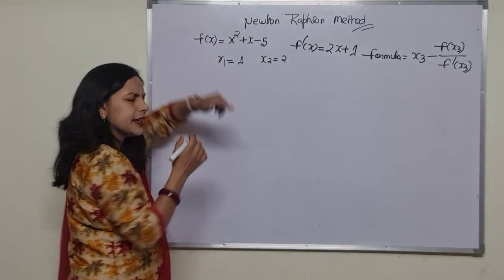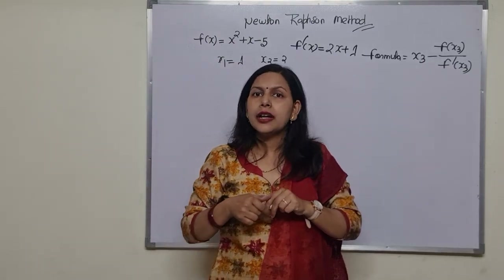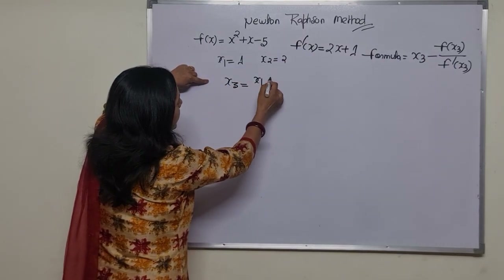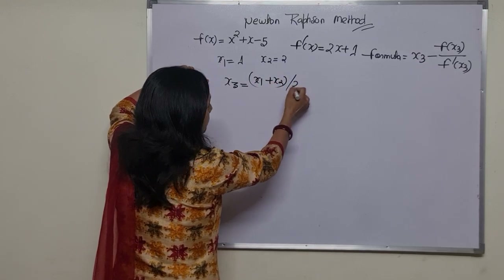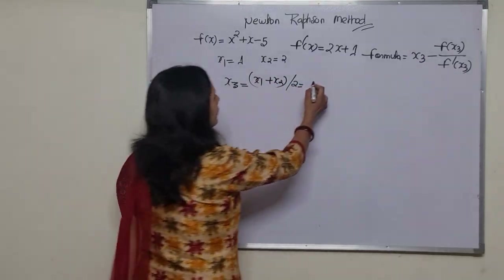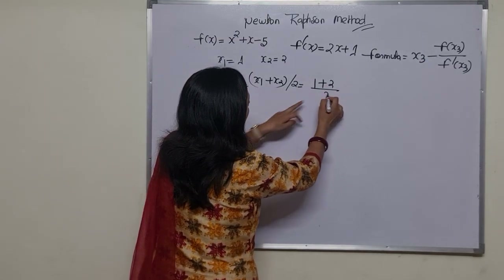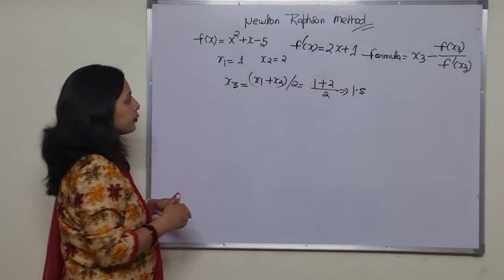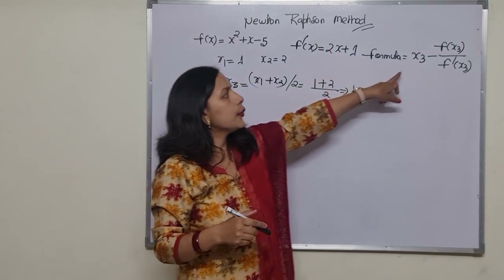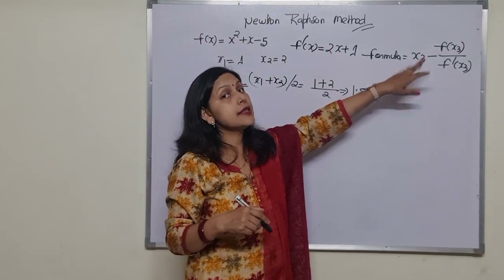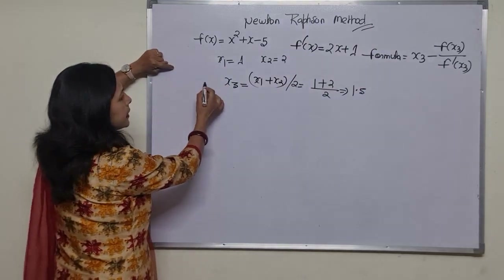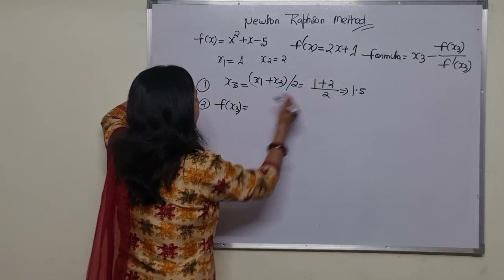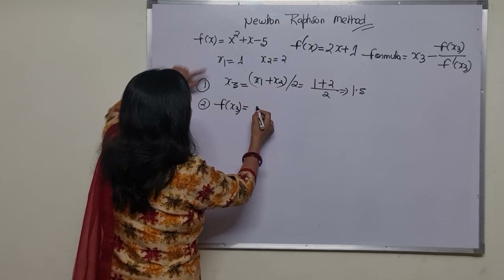In the Newton-Raphson method, we first find the mean. So x3 equals x1 plus x2 divided by 2, which gives us 1.5. According to the formula, we need f(x3), so we put 1.5 into the equation.